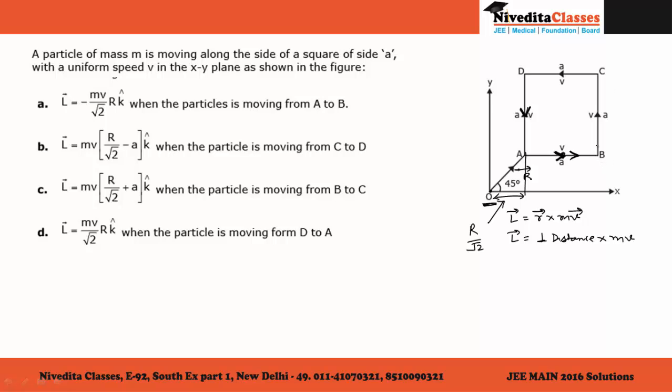When it is going from B to C, the perpendicular distance will be equal to R divided by root 2 plus A.